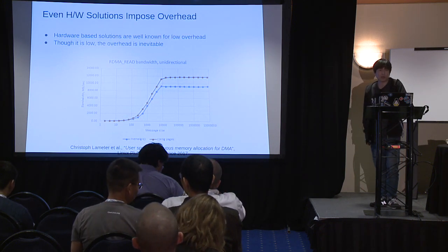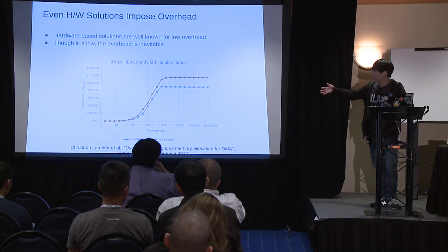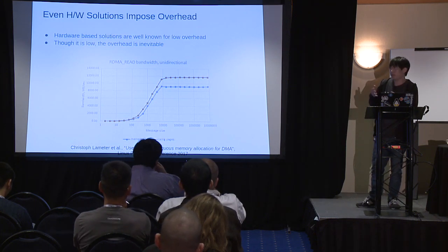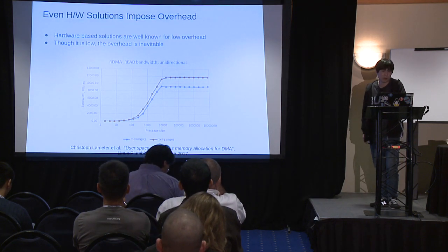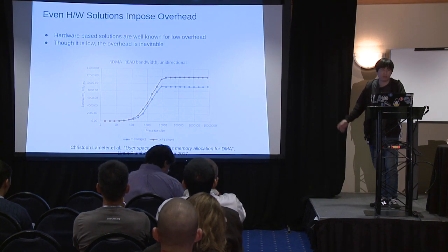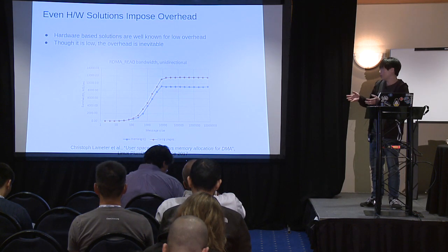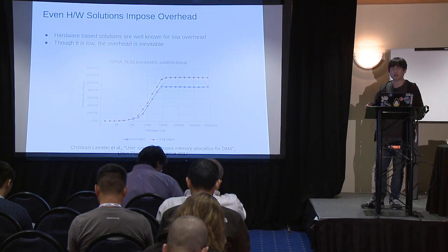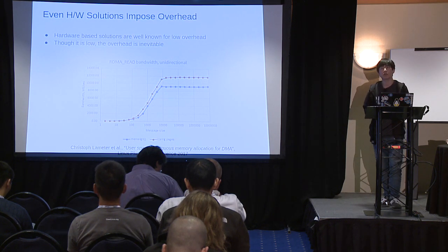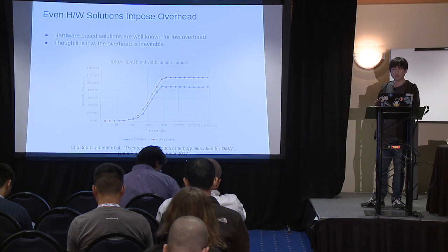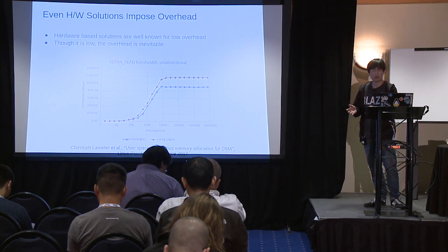Furthermore, the hardware solution is not only expensive but also imposes overhead. A graph from last year's conference, presented by Christoph Lameter and colleagues — the presentation was titled 'User Space Contiguous Memory Allocation for DMA' — shows RDMA read performance with and without contiguous pages and with Scatter-Gather DMA, and it clearly shows the overhead. So hardware-based solutions are well-known as low-overhead, but though the overhead is lower than software-based solutions, it is still inevitable and really exists.